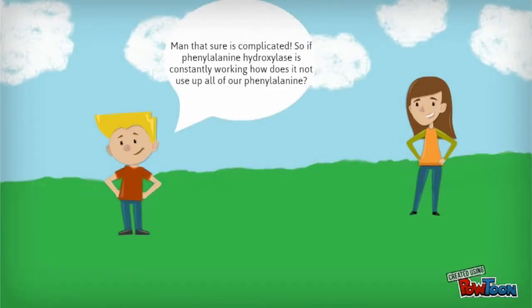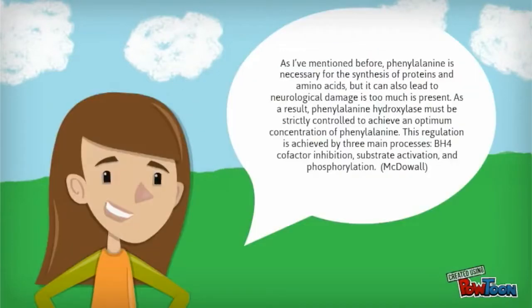Man, that sure is complicated. So phenylalanine hydroxylase is constantly working. How does it not use up all of our phenylalanine? Great question, Harry. As I've mentioned before, phenylalanine is necessary for the synthesis of proteins and amino acids, but it can also lead to neurological damage if too much is present. As a result, phenylalanine hydroxylase must be strictly controlled to achieve an optimum concentration of phenylalanine. This regulation is achieved by three main processes: BH4 cofactor inhibition, substrate activation, and phosphorylation.